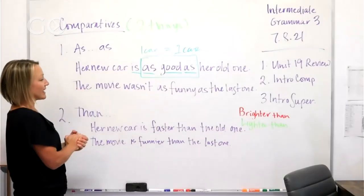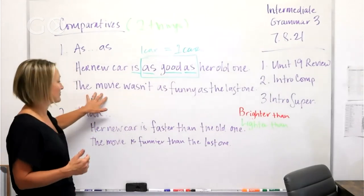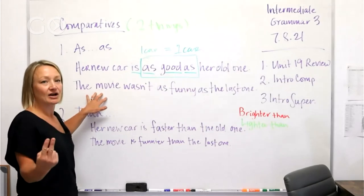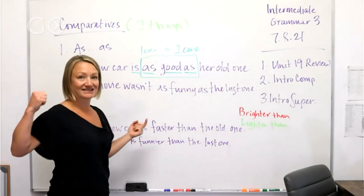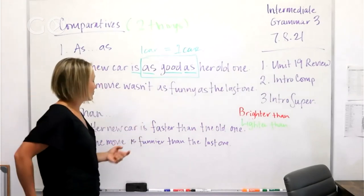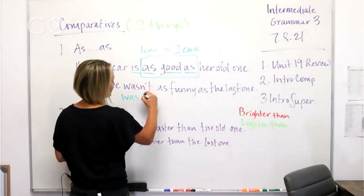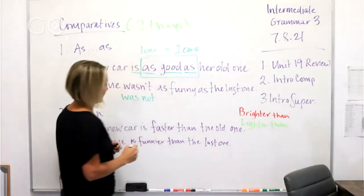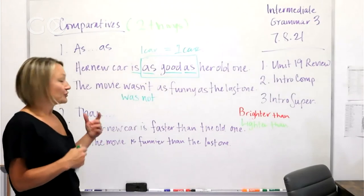Another example and this one is negative. So we're going to compare two things, we're going to compare one movie and another movie. So the movie wasn't, this is past tense. So the past tense, and is was, and then we're using the negative. You can also use this in the past tense, the present tense and the future.